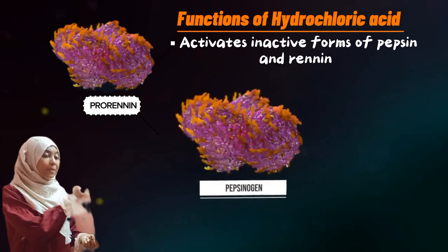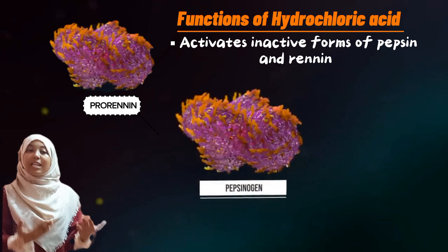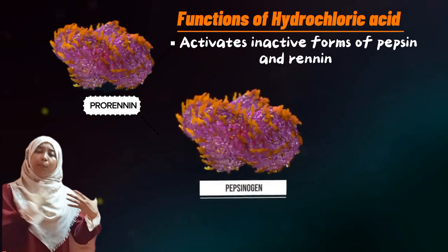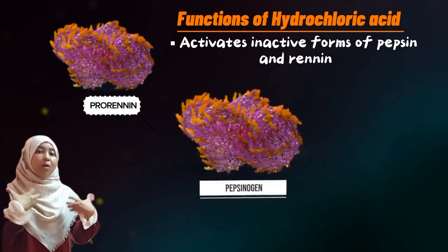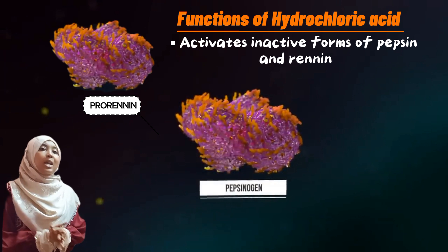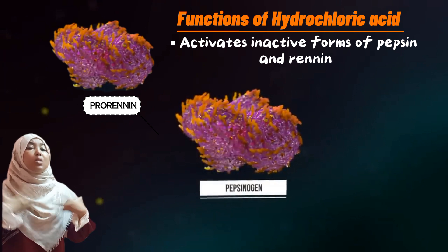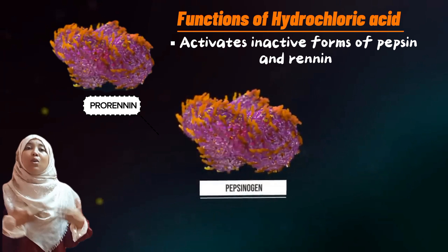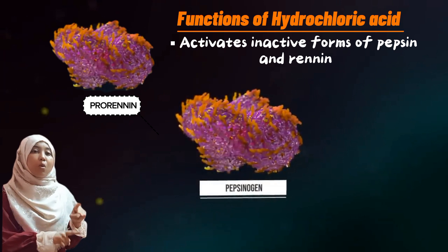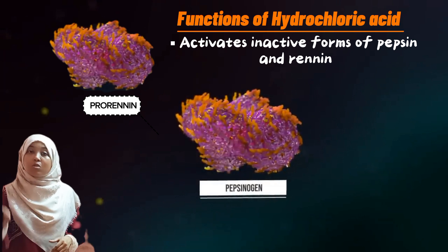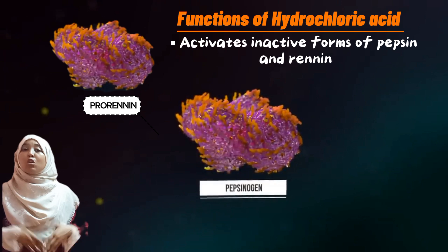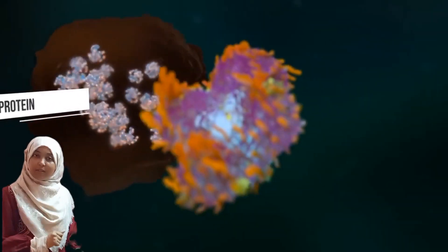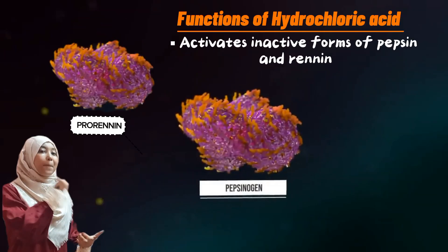The enzymes pepsin and rennin are secreted in an inactive form — they are not active at the point of secretion. The reason is that these enzymes work on proteins; they break down proteins. So they are not activated unless food is present and hydrochloric acid is also present. If active without food, they can digest the stomach walls themselves, which are made of proteins. To prevent this, they are secreted in an inactive form and only activated in the presence of hydrochloric acid.